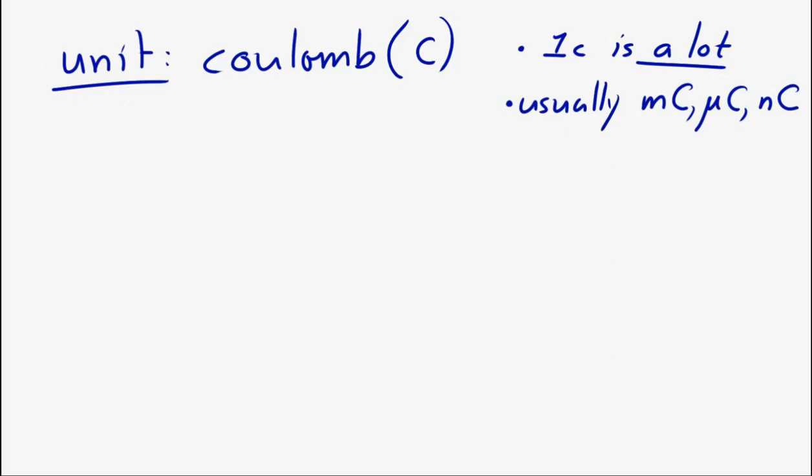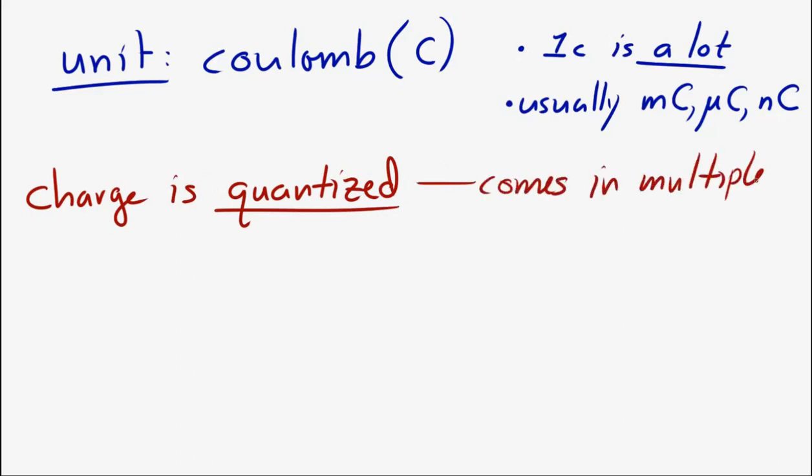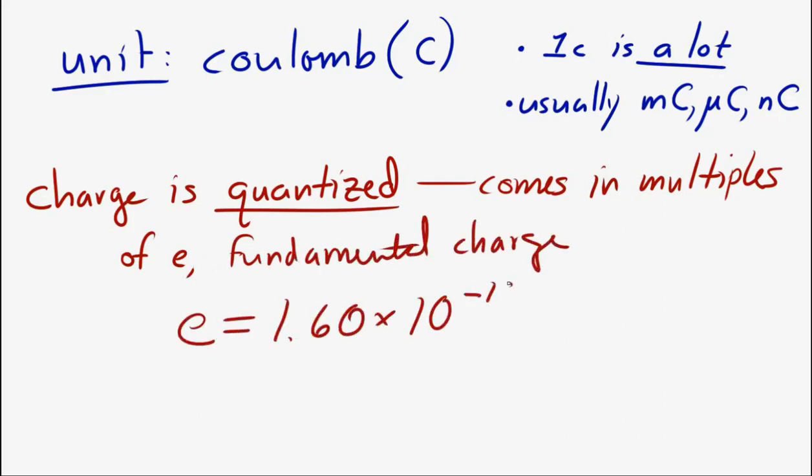One other strange thing about charge is that it's quantized, meaning it always comes in multiples of the fundamental charge E. The fundamental charge E is equal to 1.60 times 10 to the minus 19 Coulombs. Every charge that exists in nature and in the laboratory will come in lumps of this fundamental charge. You will never find half of that fundamental charge on an object.